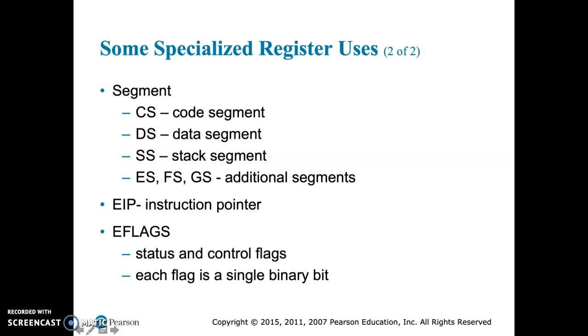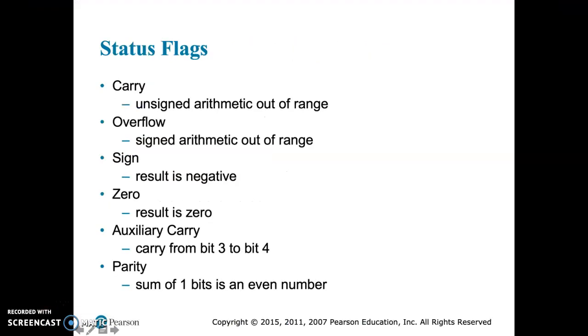And then finally, we have E-flags. It's called E-flags for the 32-bit CPU and R-flags for the 64-bit. That is a place where results of operations from the CPU are stored. And here is a couple of those actual flags that are stored in the E-flags register.